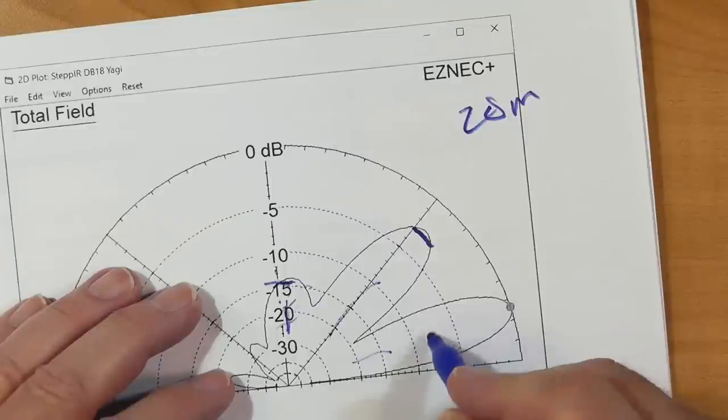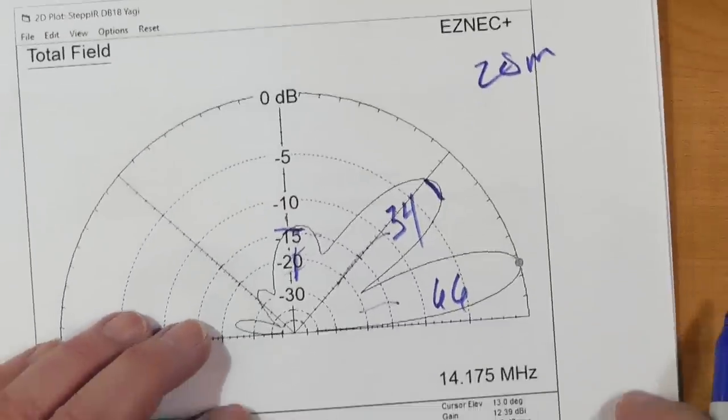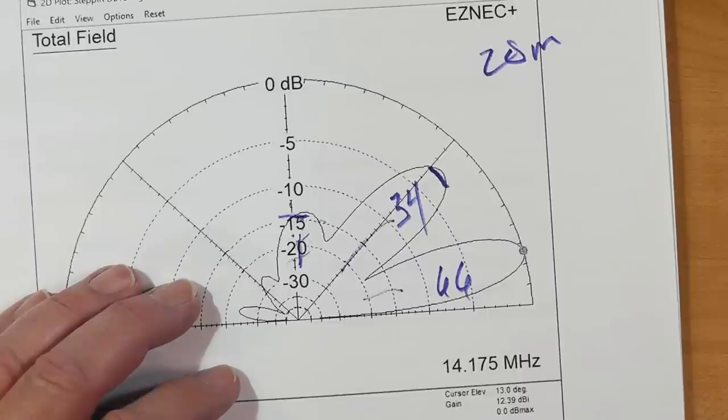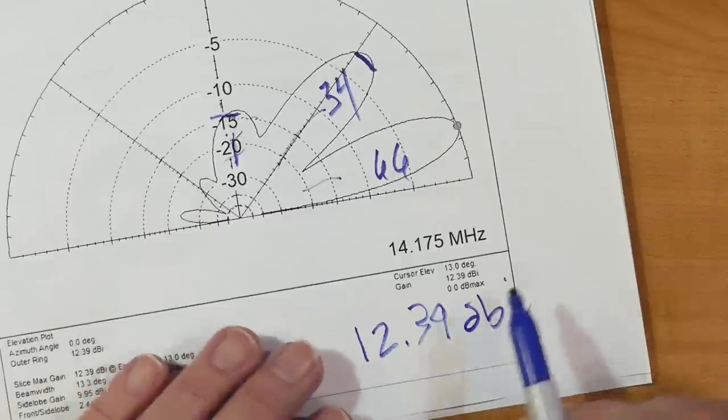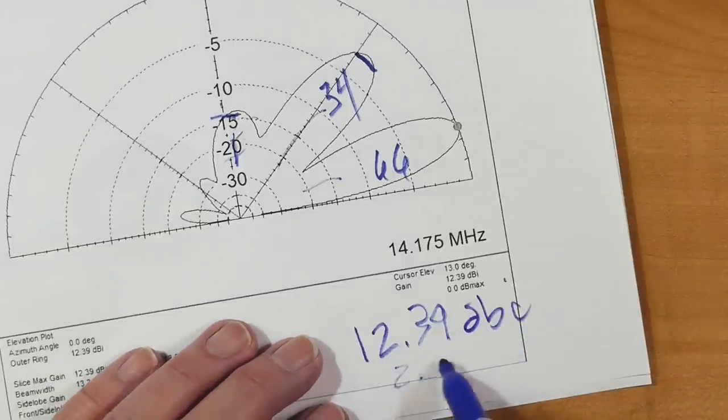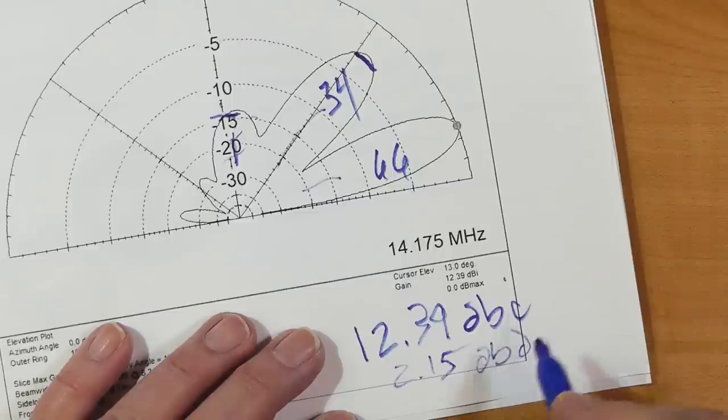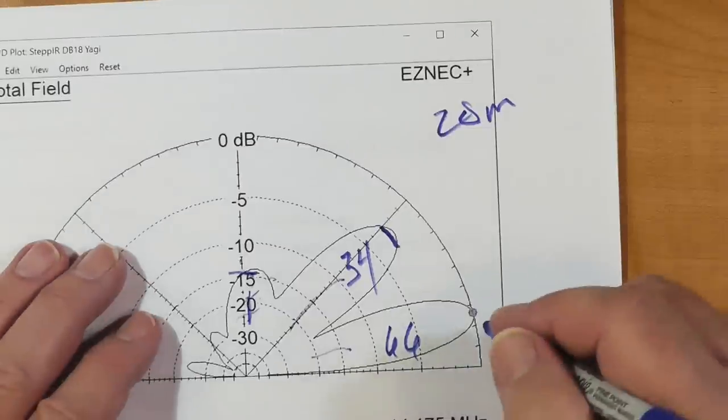So if we have 100 watts, I'm going to say 100, think of it as 100% power. We're going to be at about 66 here, and about 34 here. So now let's look at the gain. The gain is 12.39 dBi. Now, classically, we subtract 2.15 to get it to dBd, which is what everybody really thinks of. Let's just say it's about 10 dB gain over dipole.